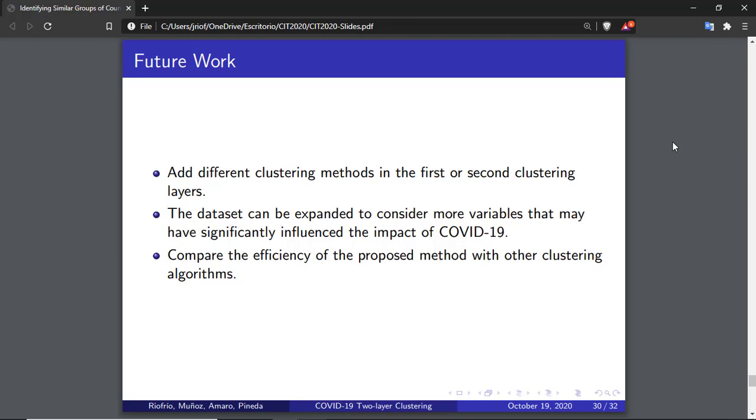The proposed method can be modified for future work to add different clustering methods in the first or second clustering layers. It is important to consider methods that work well with the selected dataset. The dataset can be expanded to consider more variables that may have significantly influenced the impact of COVID-19, for example, considering the public policies applied in the countries to stop the advance of the disease, as this information is directly related to the spreading of COVID-19. Another work that can be performed in the future is to compare the efficiency of proposed methods with other clustering algorithms.